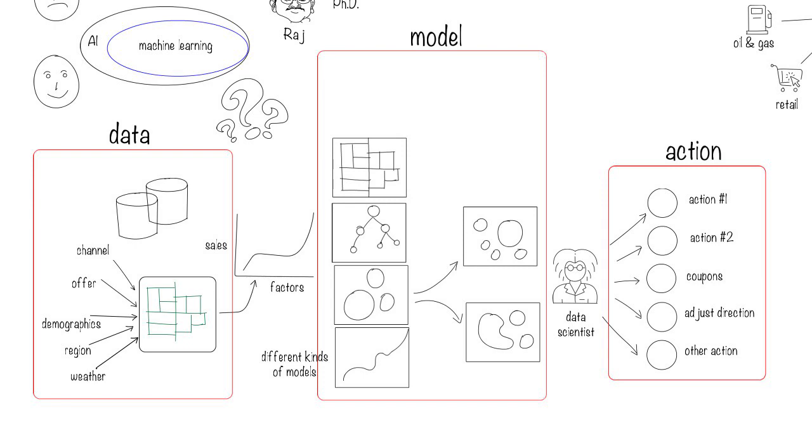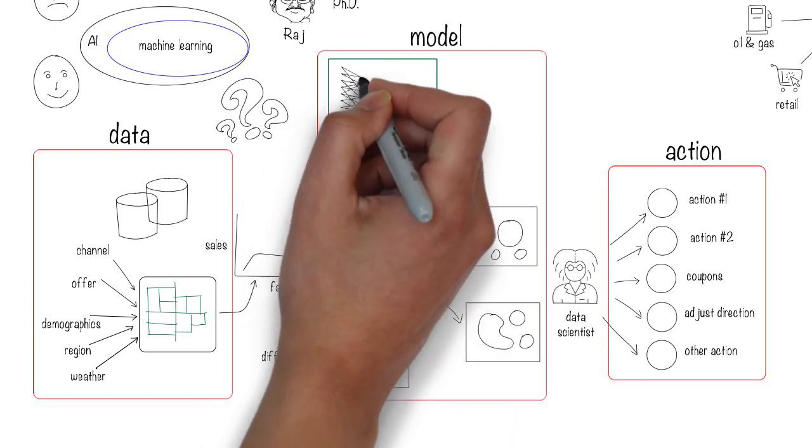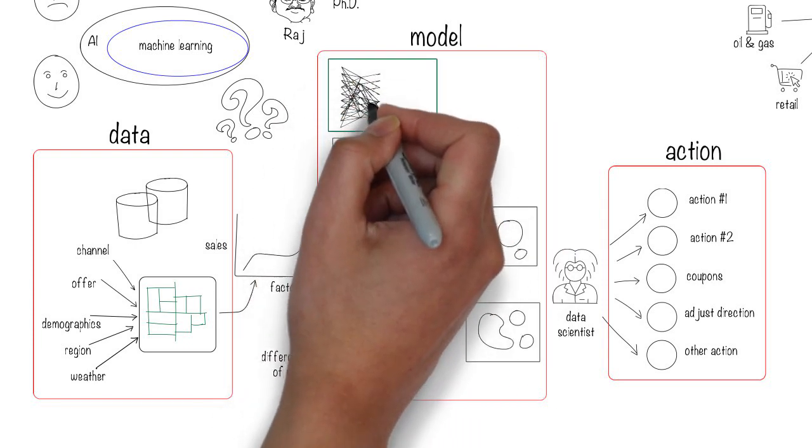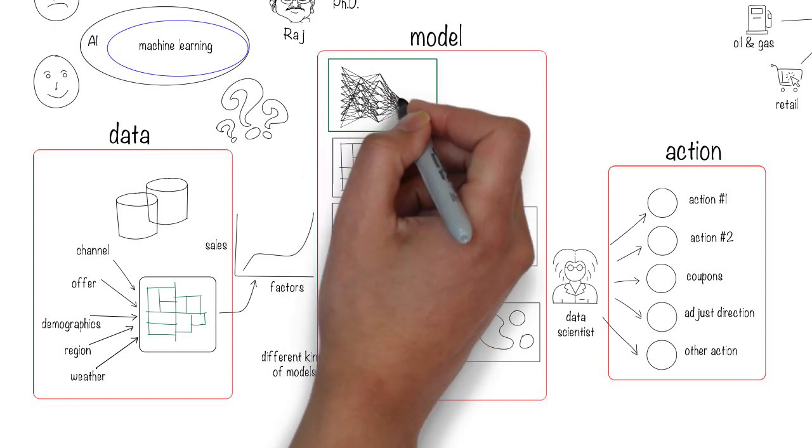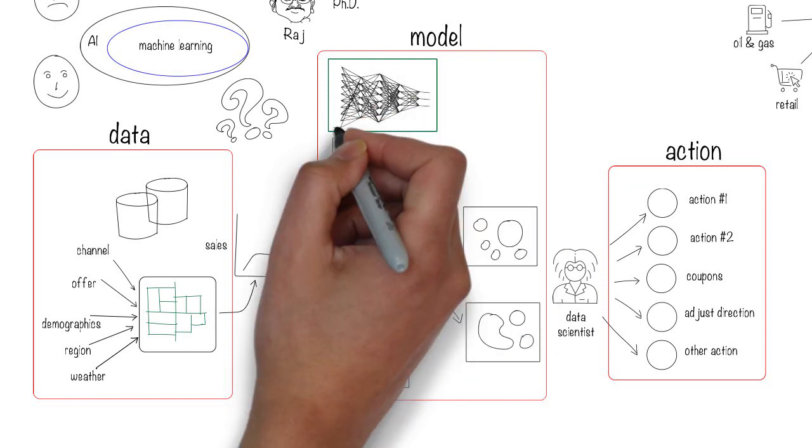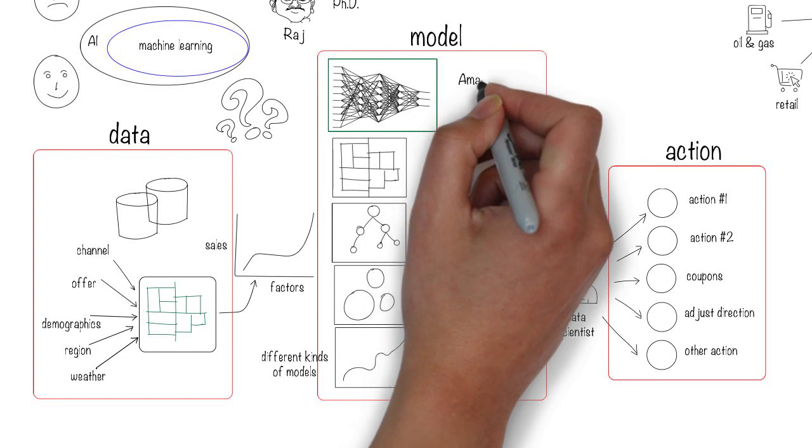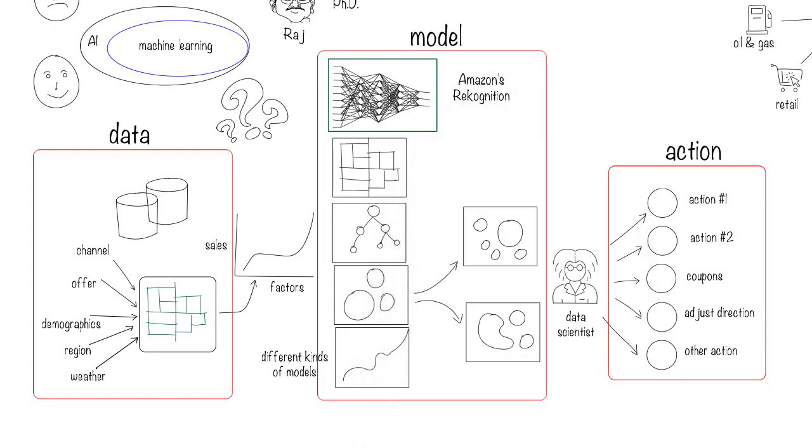Sometimes you can get away with not having much data, and this is for common problems that have already been solved by somebody else. Take face recognition for example. Amazon has created a model that has already been trained to recognize objects and faces. You can simply take their model and use it for face recognition. These are called pre-trained models.